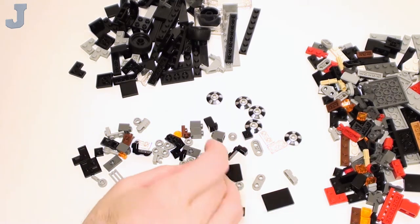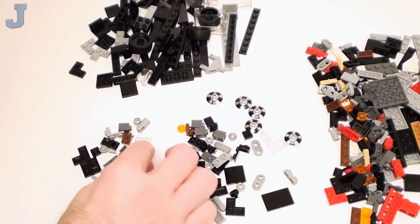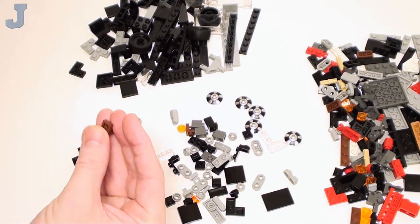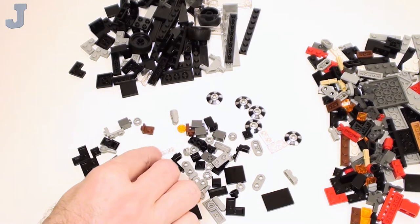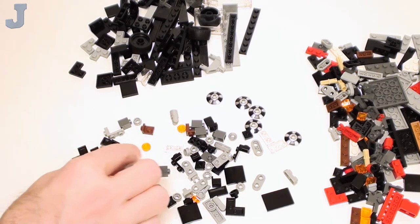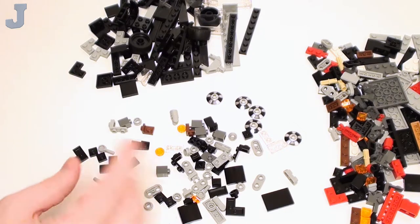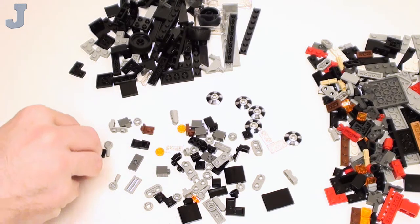And of course we get corner wall elements and 1 by 1 bricks. And an upwards 1 by 1 by 1 angular plate. Round transparent orange flat tiles. 1 by 1 plates, some corner flat tiles.